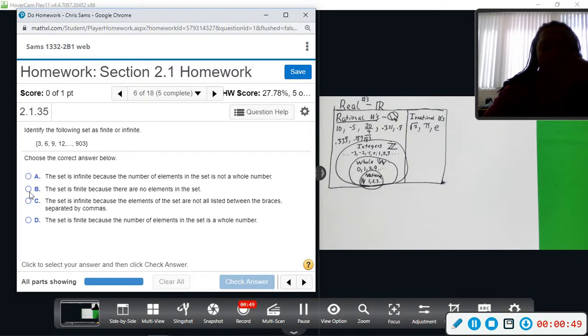So A says infinite, so that one is out. And also C says infinite, so it's either B or D.